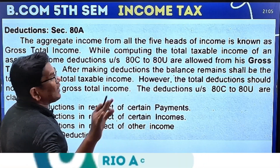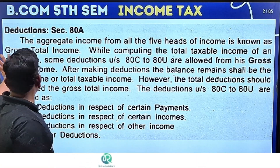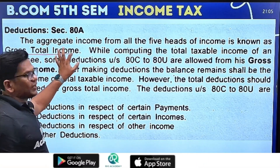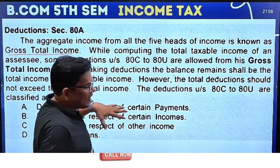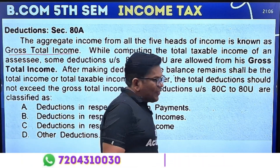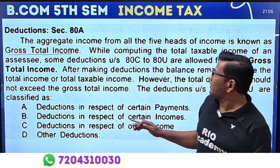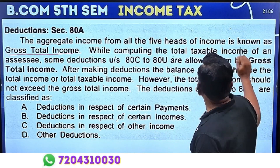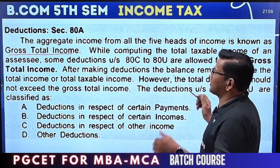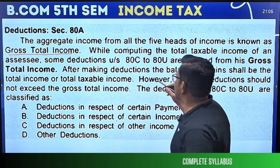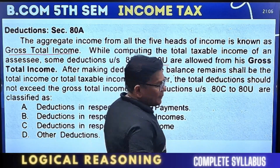The aggregate income of 5 heads is known as gross total income. While computing the total taxable income, some deductions under Section 80C to 80U are allowed.